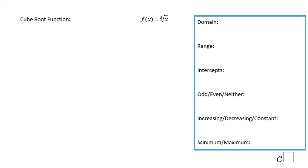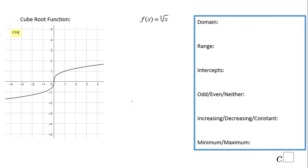The next function is the cube root function. This is the graph. The domain of this function is all real numbers — you can use any value for x. This is a little different from the square root function. The range is also all real numbers — this function can output any real number.